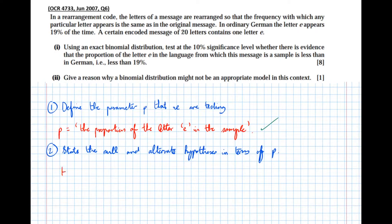So our null hypothesis, if we're sitting on the fence we assume their claim is true. So H naught colon p equals 0.19. So that's the claim that's been made, the letter e occurs 19% of the time and we're just going to assume that's true.